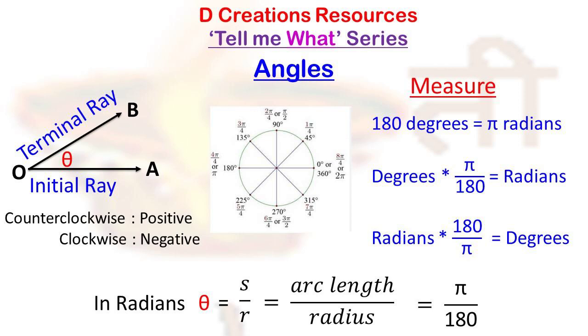So if S is the length of the arc subtended by a central angle theta in the circle of radius R, then theta will be given as S upon R. And if S is equal to R, then we would say that theta, the angle, is equal to 1 radian.